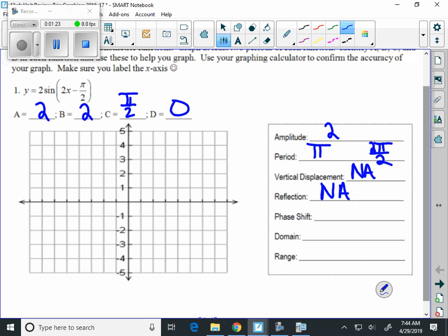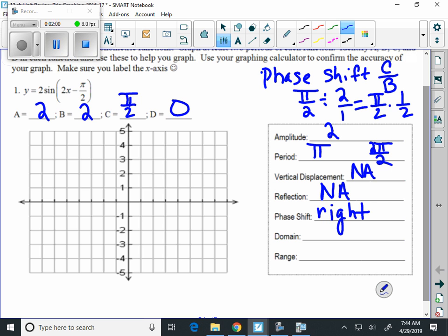We do have phase shift. And the phase shift is determined by taking C divided by B. Notice that it's 2x minus pi over 2, which means that we're going to go in the right direction. And to calculate it, I'm going to write it up here. Phase shift is C divided by B. So in this case, it's pi over 2 divided by 2, which equals pi over 2 times 1 half.